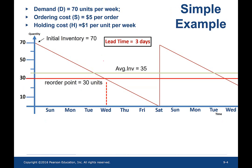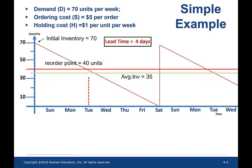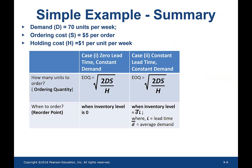The reorder point is nothing but the product of average demand and lead time. So, if the lead time is 3 days, the reorder point is 3 times 10, that is 30 units. If the lead time is 4 days, the reorder point is 4 times 10, that is 40 units. Basically, the ordering quantity never changes from case 1 to case 2.